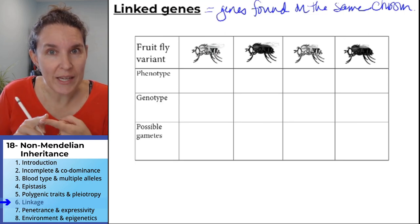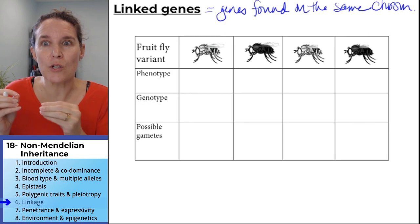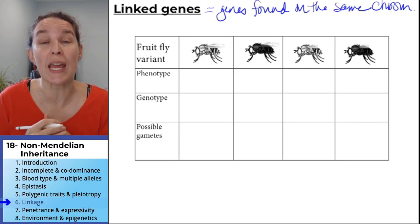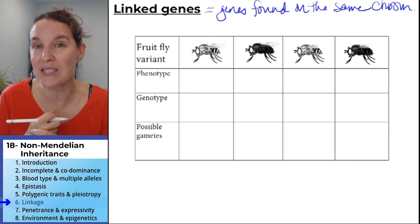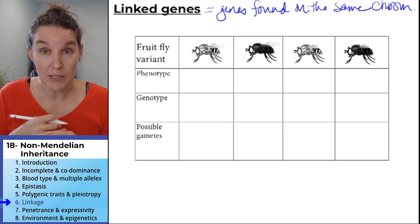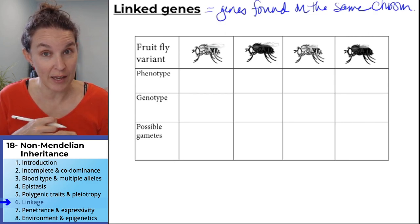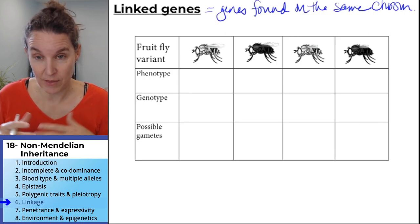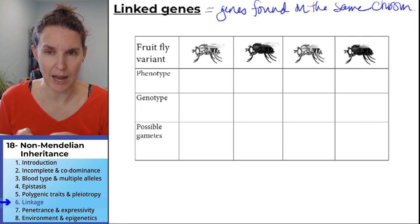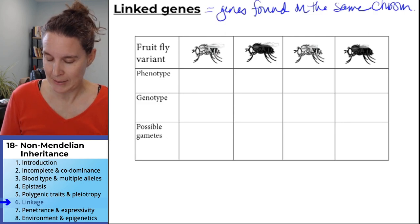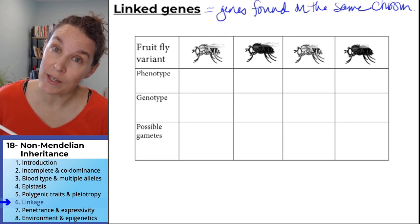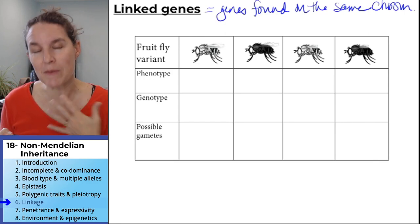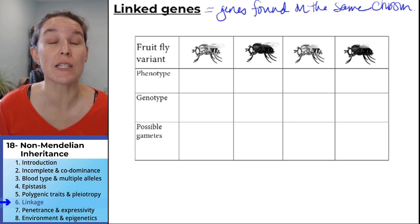We're going to look at fruit fly wing shape and fruit fly color to talk about what we would expect to see if a gene is linked — how that would change the expected ratios with Mendel's rules. I currently have a very large fruit fly outbreak at my house. My son's cat Victor came over and enjoyed the fruit fly infestation because he liked to chase and eat the fruit flies.